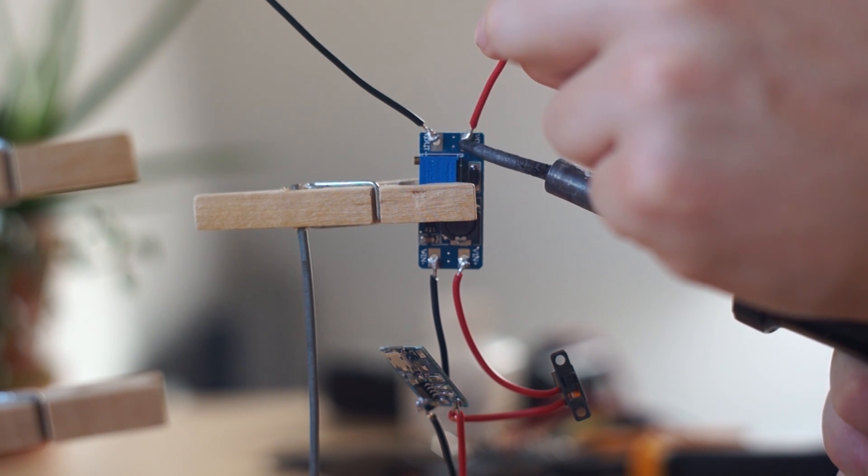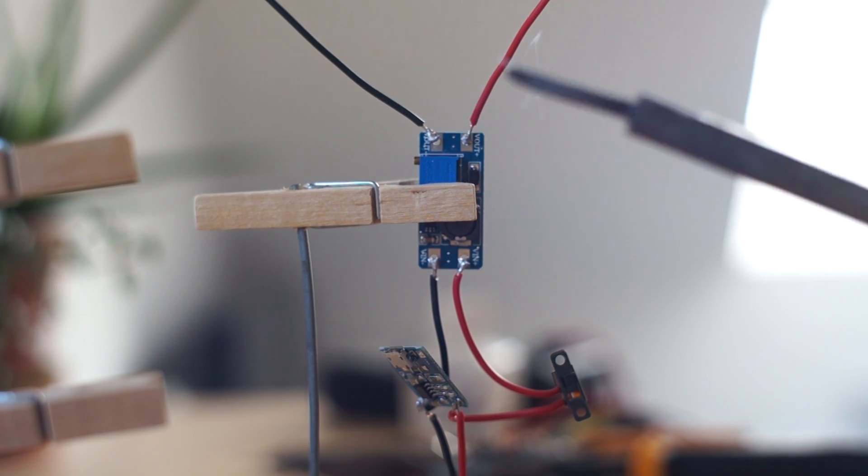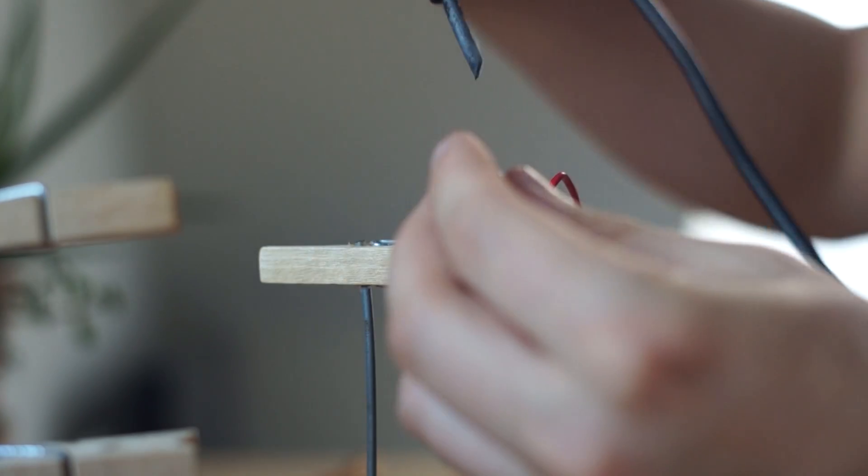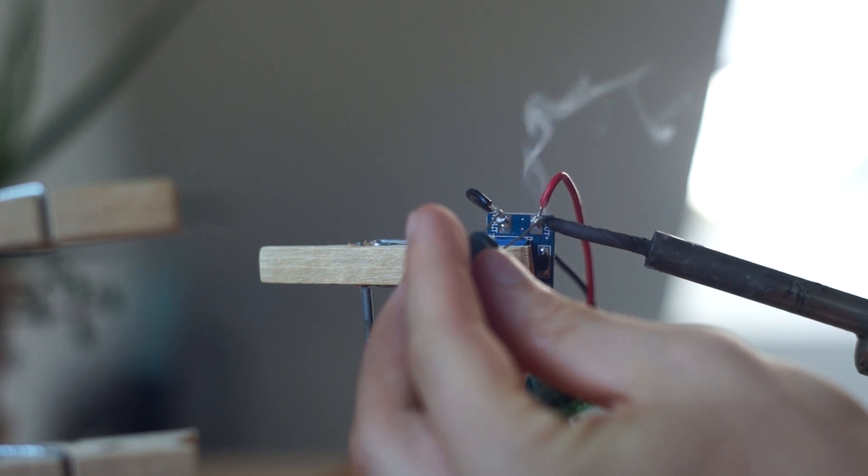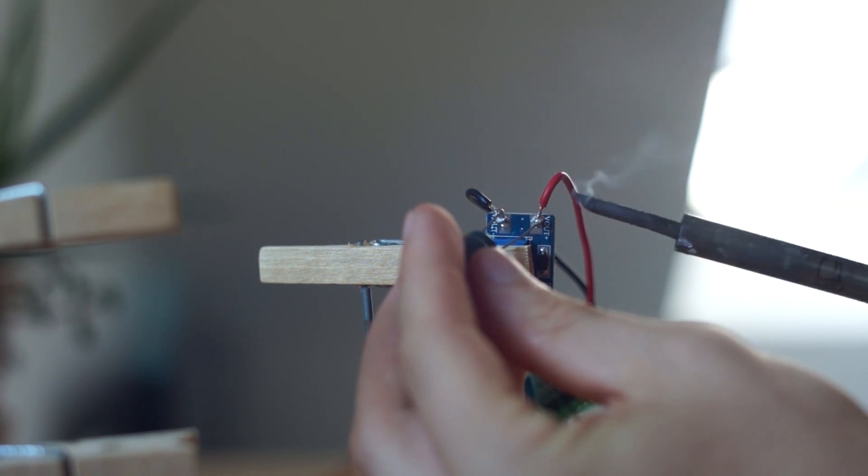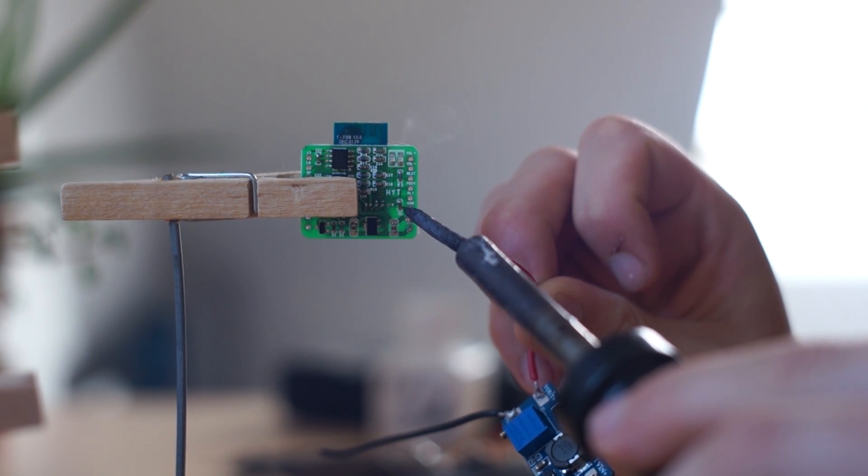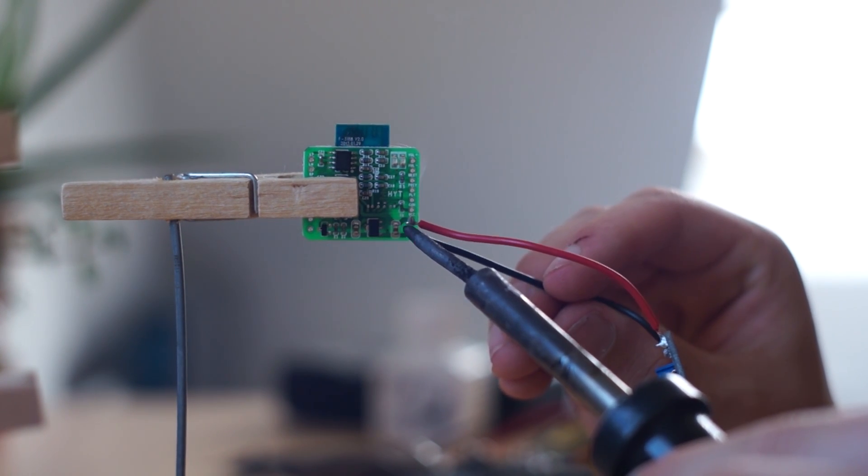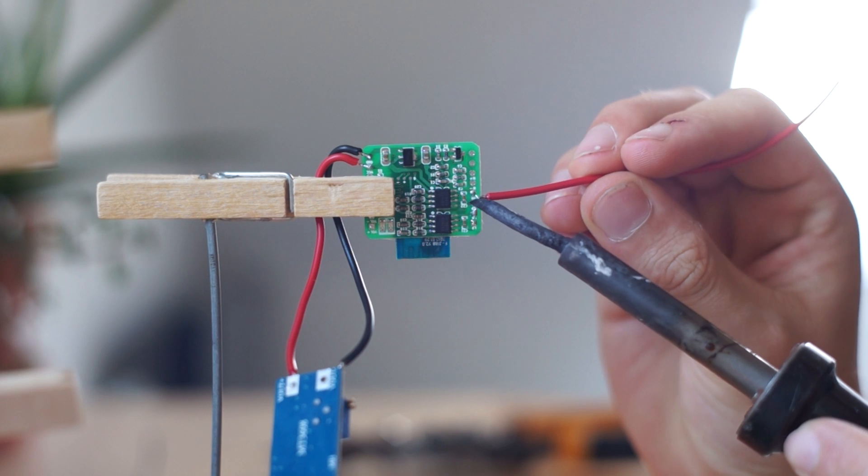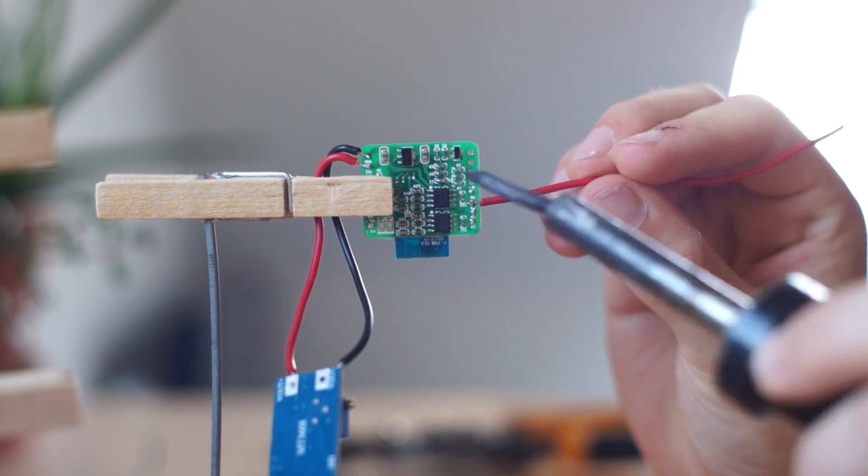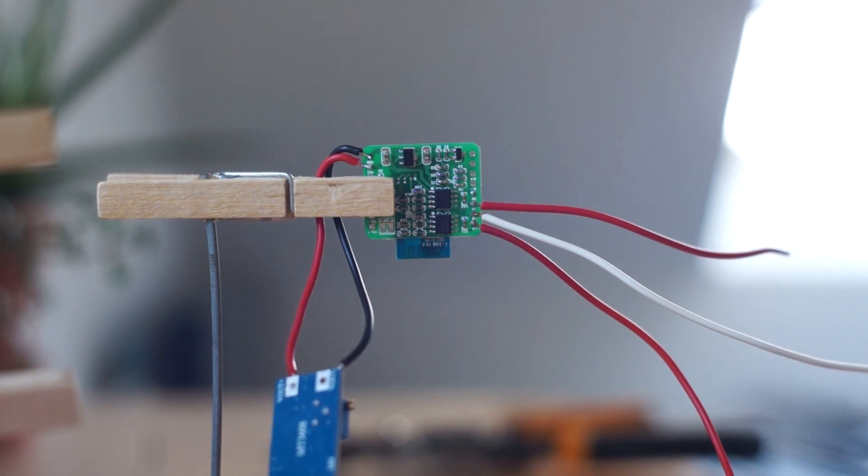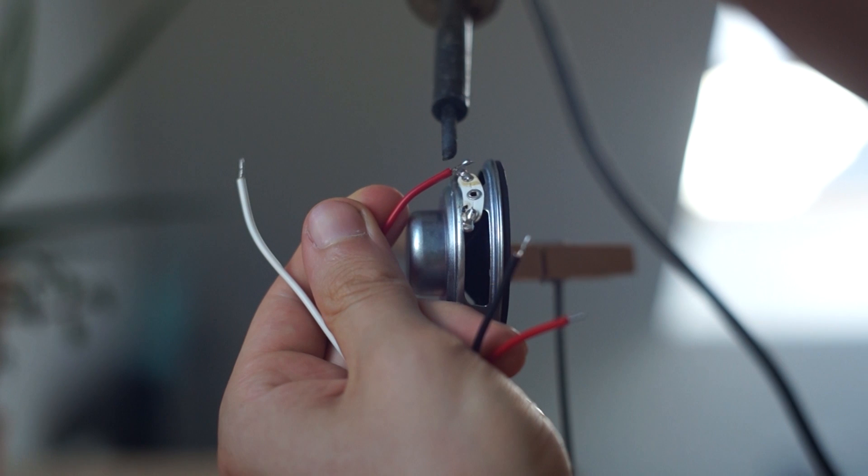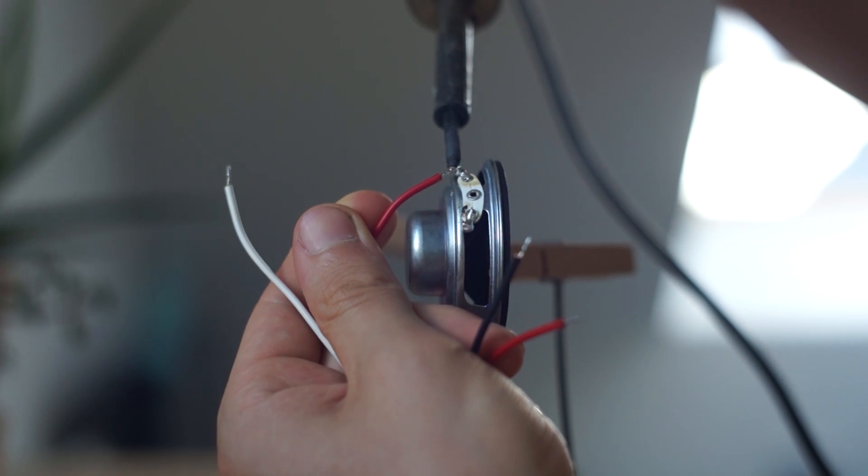While we're soldering on the wires from the output on the step up module, we're also going to add on the capacitor. The capacitor is going to go across the positive and negative terminals on the step up module, so we want the long pin on the capacitor to go to the positive and the short pin to the negative. Now that our voltage is stepped up, we're going to connect the bluetooth and amplifier module to the outputs of the step up converter. Next up we're going to solder on four wires to the board that will go to the left and right speakers.